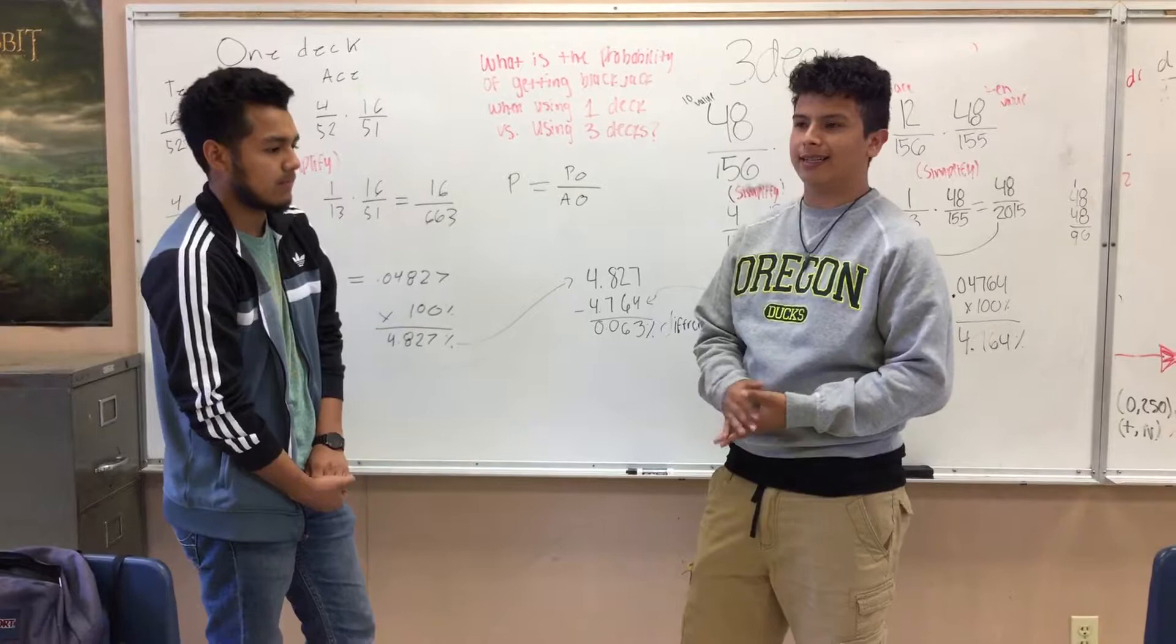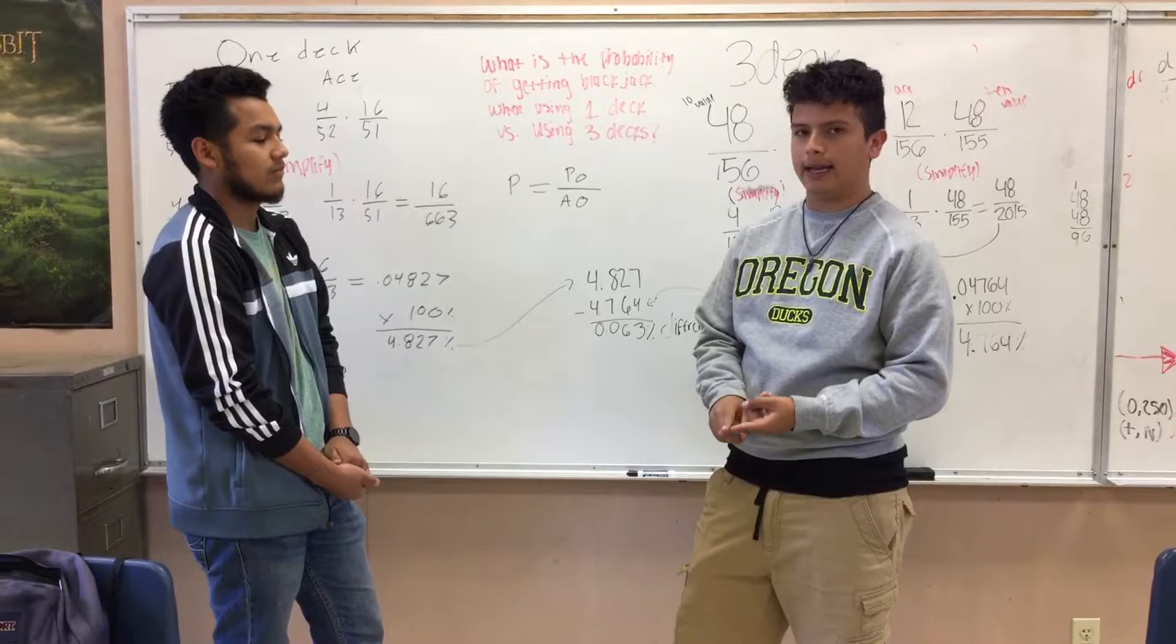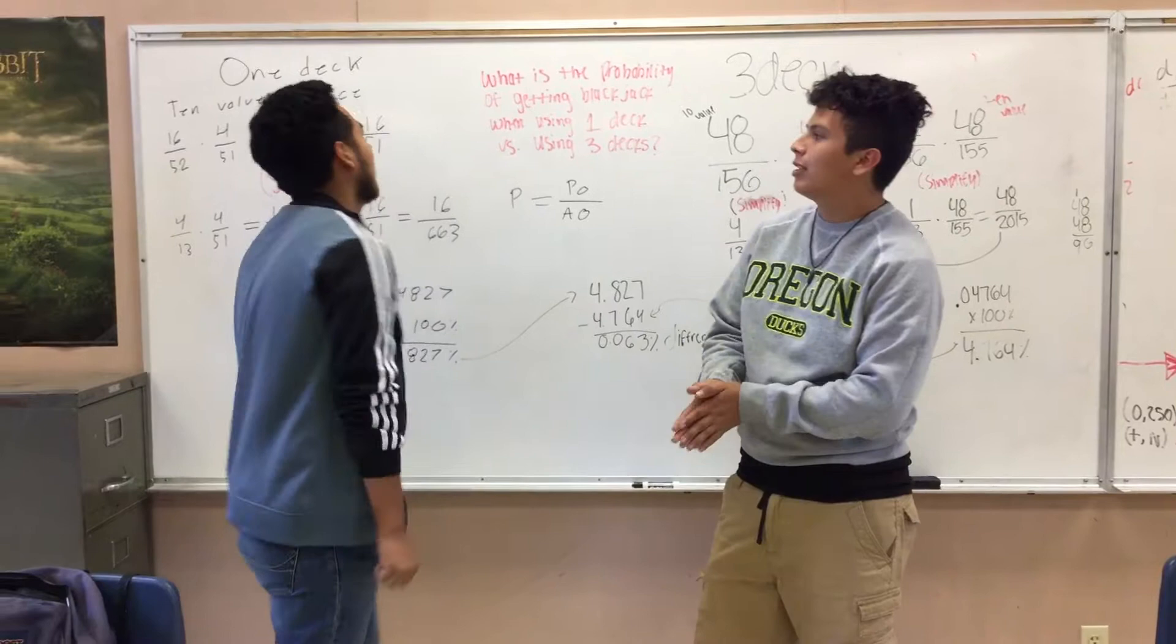...getting an ace or a 10-value card. The 10-value cards are 10, jack, queen, and king, and then the ace is just an ace. So we want to find out what is the probability of getting an ace and a 10-value card on your first hand.